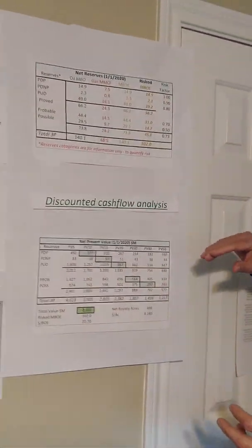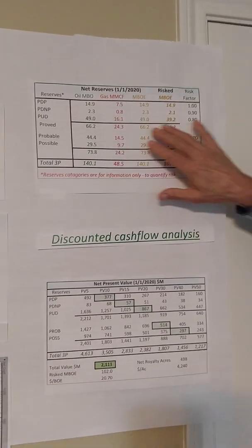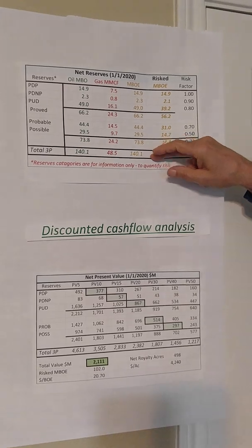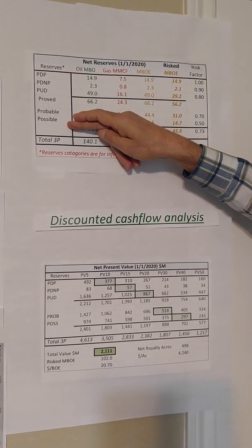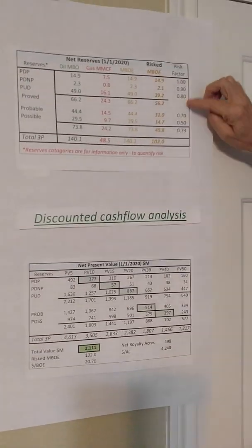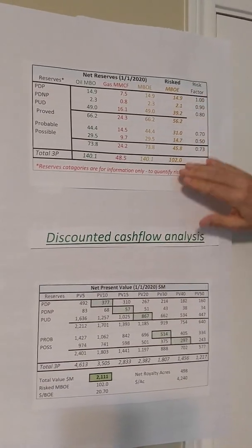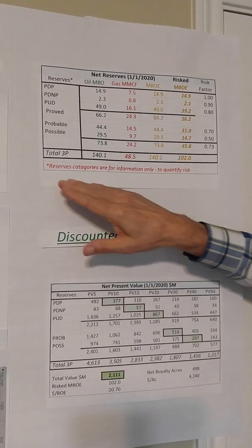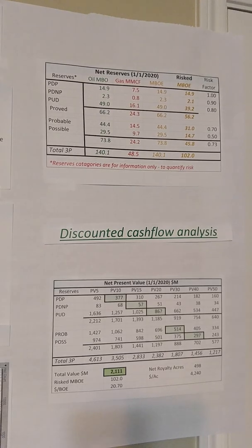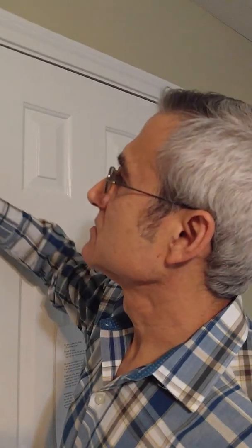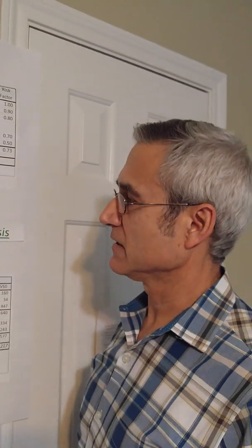When we get all that built, we can start generating reserves. Here's a reserve report as of 1-1-20. We have oil reserves, gas, and NBOEs for each category of reserves. We can put a risk factor on them if we like—we might risk the lower categories a little more. We can get a reserve and a risk reserve number and tell the client that these reserve categories are for information only because they're not the operator and have no control, so technically we can't put it as proved undeveloped.